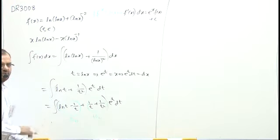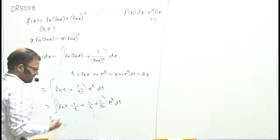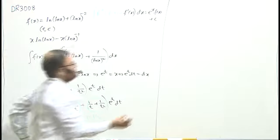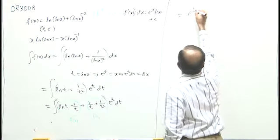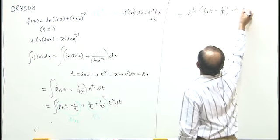Now, if I apply this formula, the result will become e power x f of x. That means, the result will become equal to e power t into ln t minus 1 by t plus c.